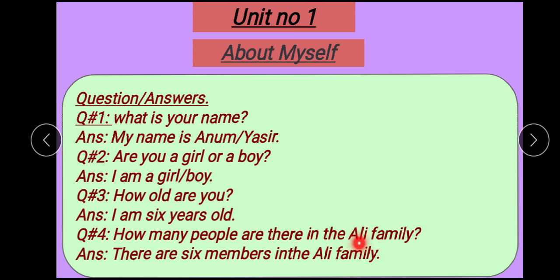Question number 4: How many people are there in the Ali family? There are 6 members in the Ali family. You need to write a one-finger gap after every word — keep your finger and maintain the gap. Use Nelson writing; joining writing is not done.